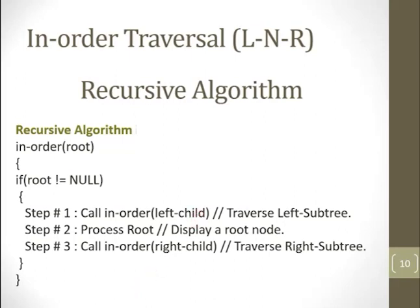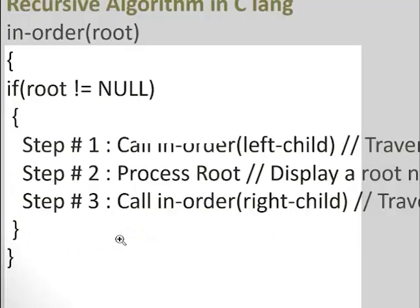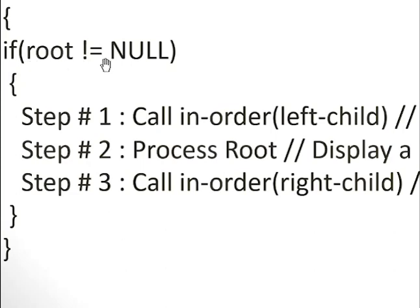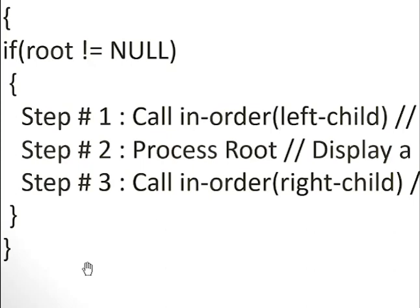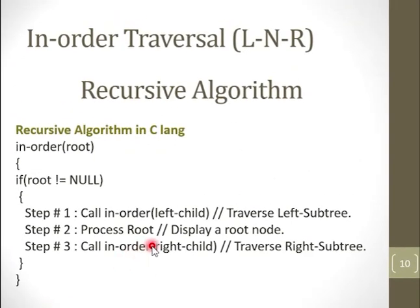Let's focus on the steps: first, check whether root is not equal to null. If not null, call the function recursively passing the left child. Continue till current root is null. Then process the root node and go forward to the next step — recursively call inorder passing the right child. Make it root, check if not null, and again check for left child of the new root. Perform this recursively to get the result.